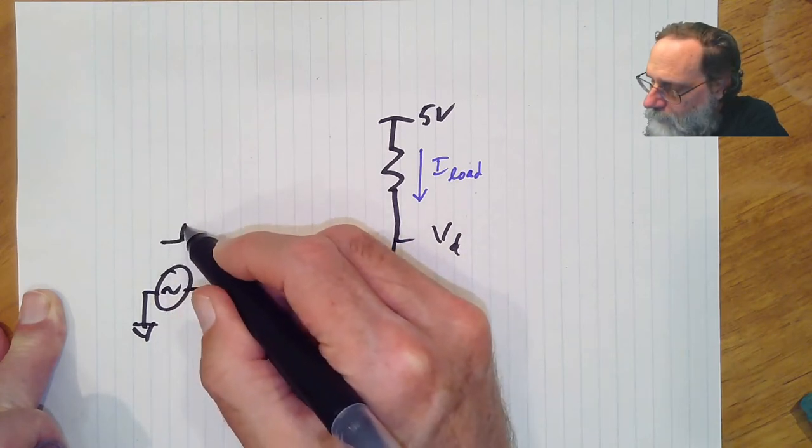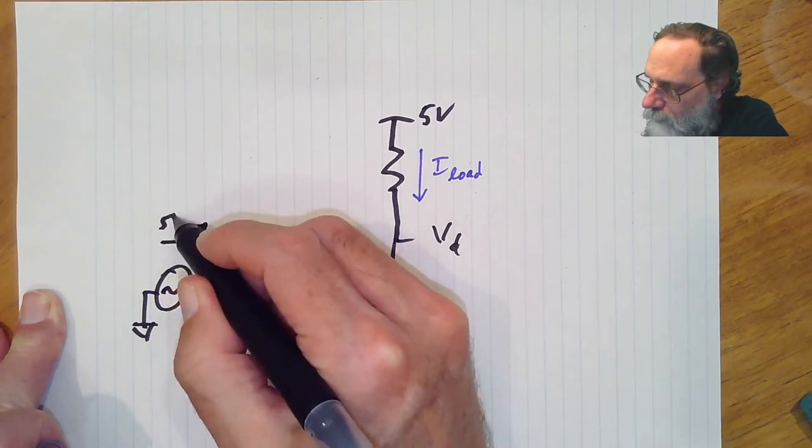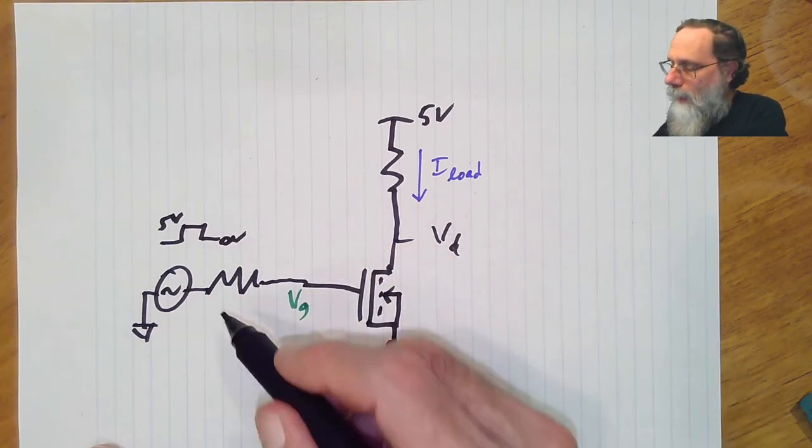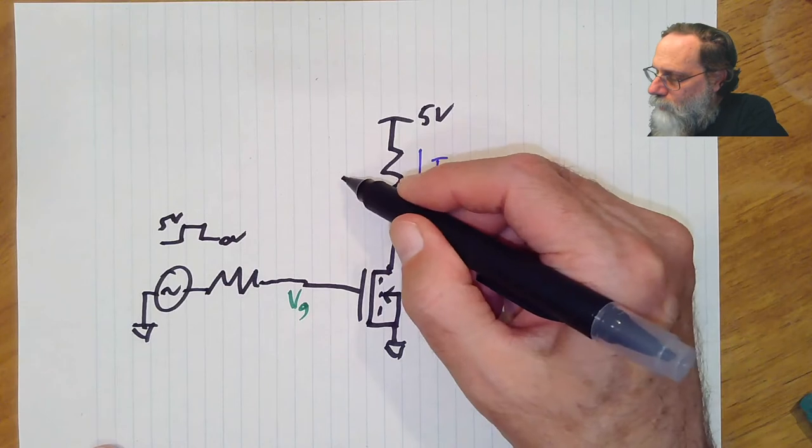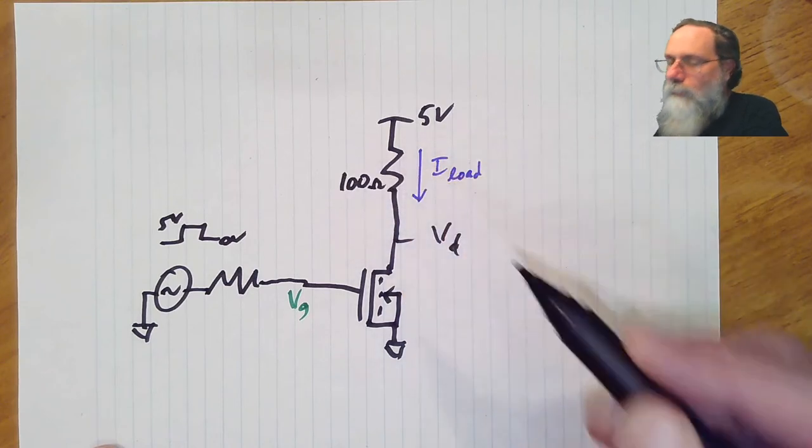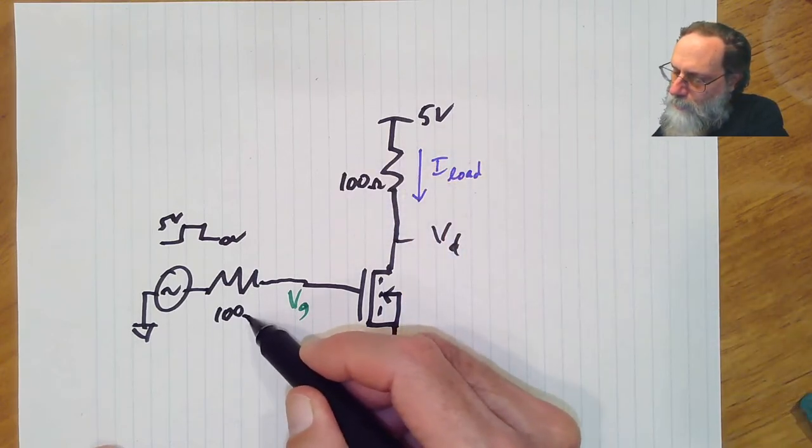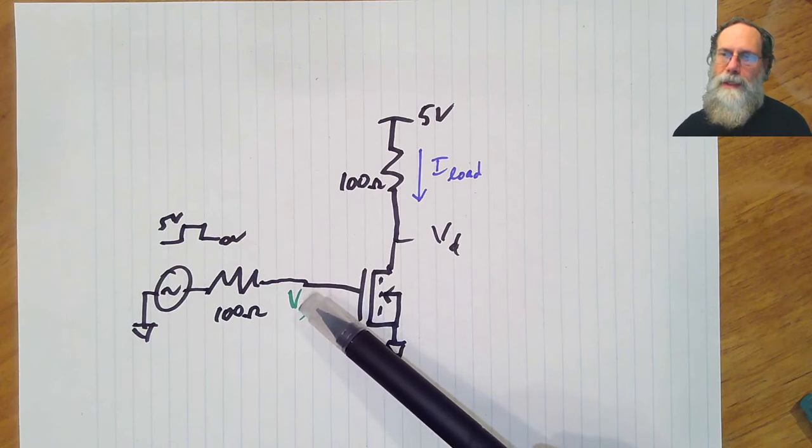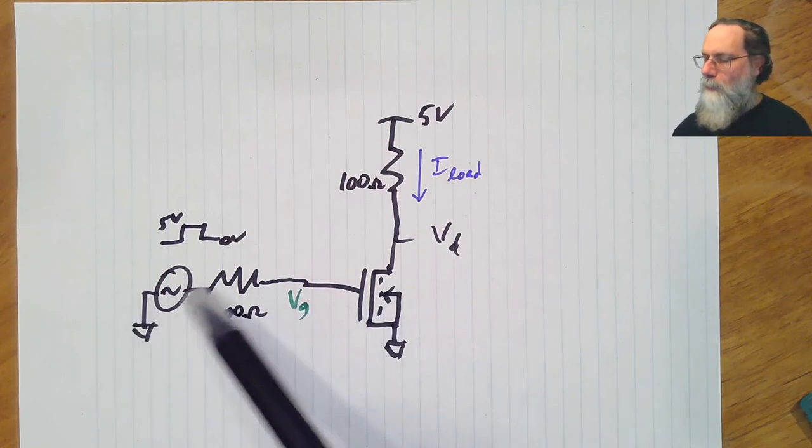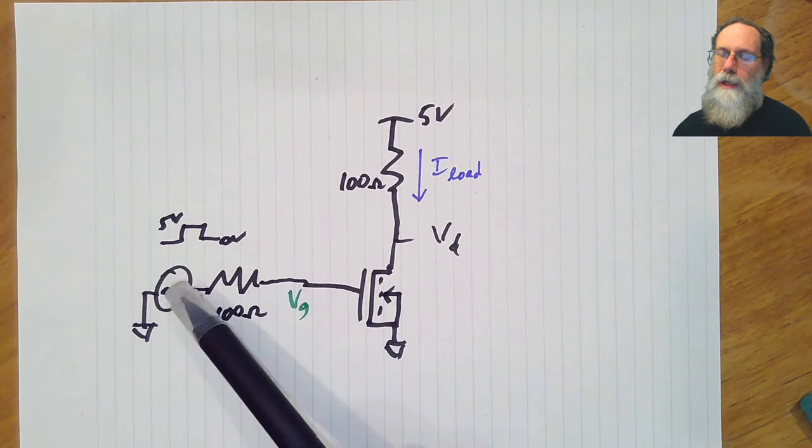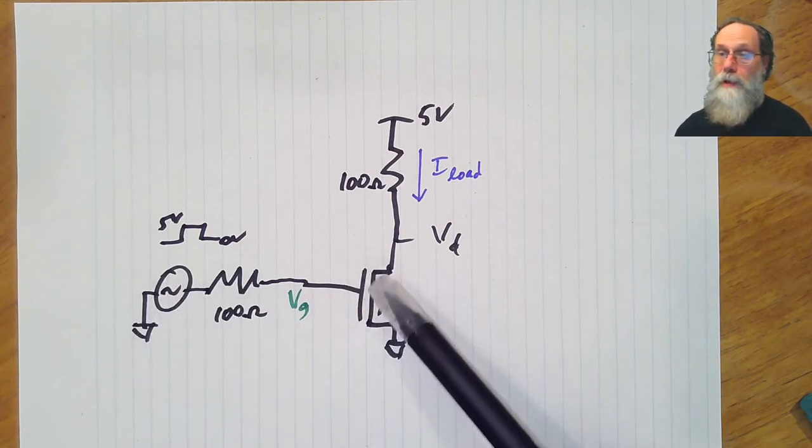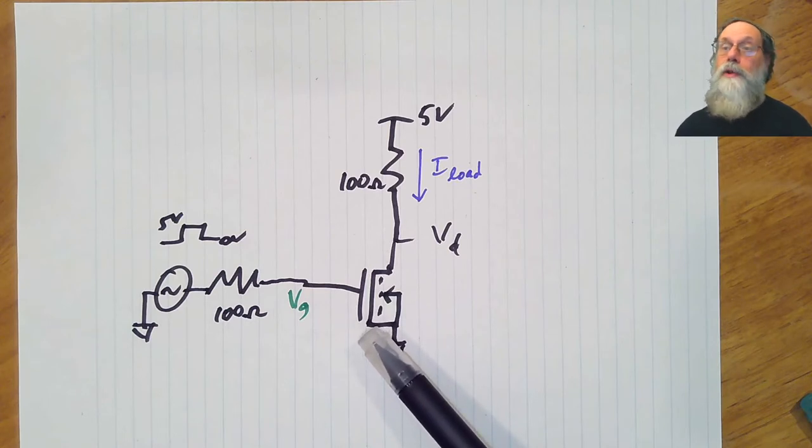The function generator here is actually going to be a square wave or pulse between 0 volts and 5 volts. And for the load resistor, I'm going to use 100 ohms. I'm also going to put 100 ohms here. The reason for that is to be able to see what's going on at the gate, because the 100 ohms here is going to limit the amount of current I can get from the function generator. As a result, the capacitor here is going to charge much more slowly than usual.